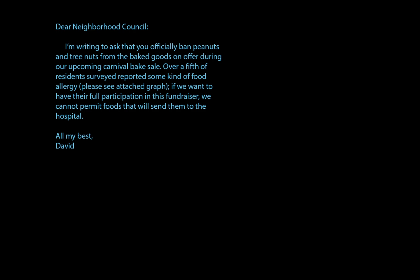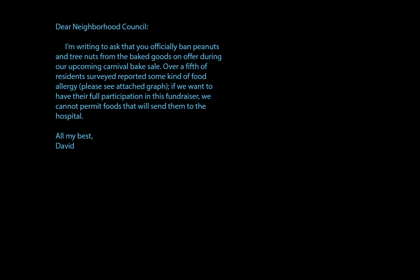If we want to have their full participation in this fundraiser, we cannot permit foods that will send them to the hospital. All my best, David. Now let's take a look at that graph. These are made-up numbers in a made-up situation, but let's say I interviewed 50 of my neighbors. 40 of them report no allergies, but 10 of them do. So we have a bar graph that breaks down those allergies by type: one person is allergic to strawberries, two people are allergic to peanuts, four people are allergic to tree nuts like pecans or walnuts, and three people have multiple food allergies. The remaining bar shows the 40 folks without food allergies.